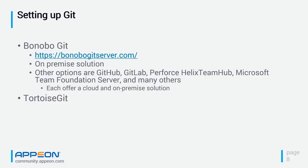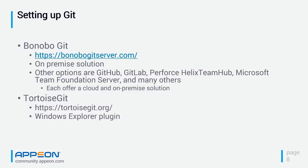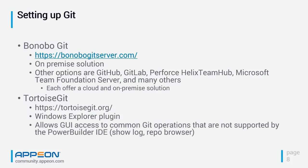Tortoise Git allows you to do that. You could also use the Git command line, but Tortoise Git is a GUI — a plug-in for Windows Explorer. You navigate to your local copy of the source code in Windows Explorer, right-click on the object or folder you're interested in, and Git options appear in the pop-up menu. It makes Git much easier to use and supports Git operations not available in the PowerBuilder IDE.